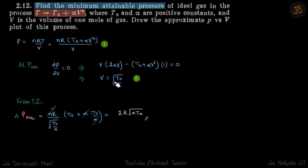So this gives V is equal to root T naught by alpha. So when the volume of the gas is this much, then pressure is minimum. So we'll just put this value of V here and get our answer.